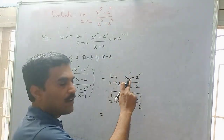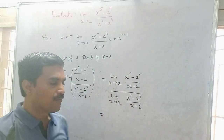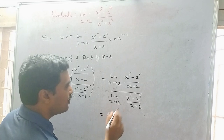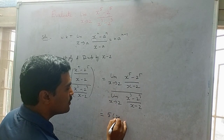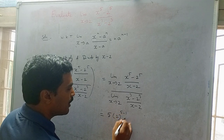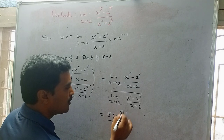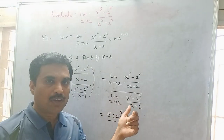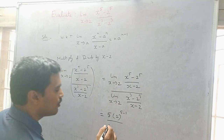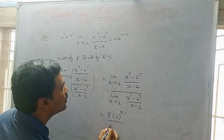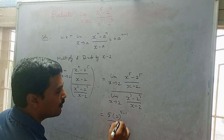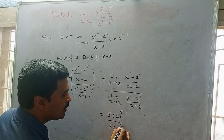In the numerator, n equals 5, so we get 5 times 2^(5-1), which is 5 times 2^4. In the denominator, n equals 3, so we get 3 times 2^(3-1), which is 3 times 2^2.